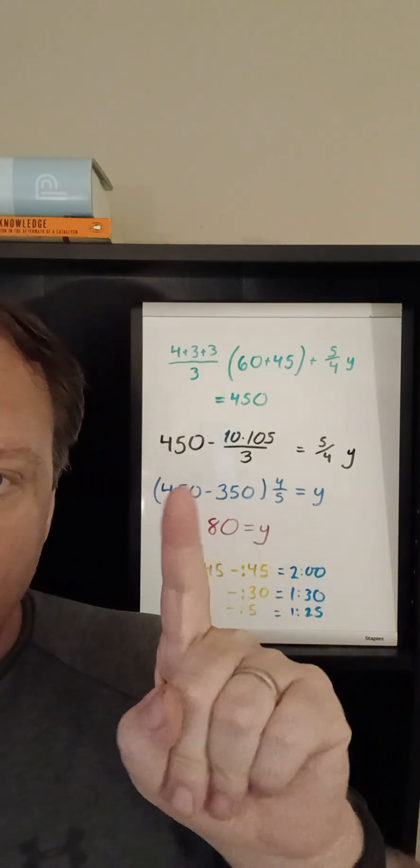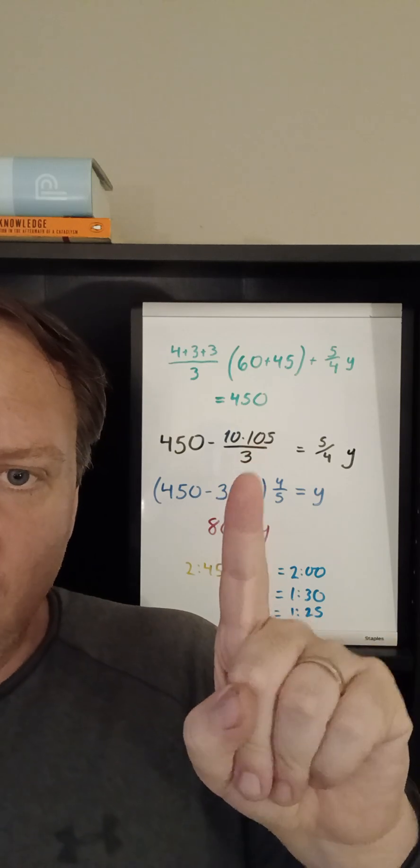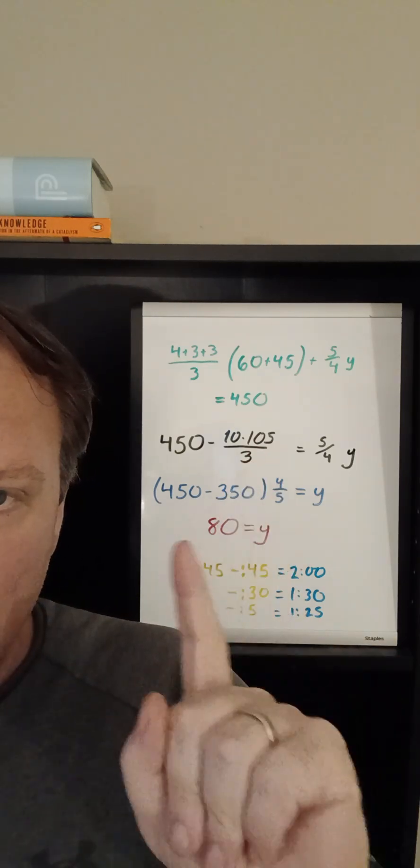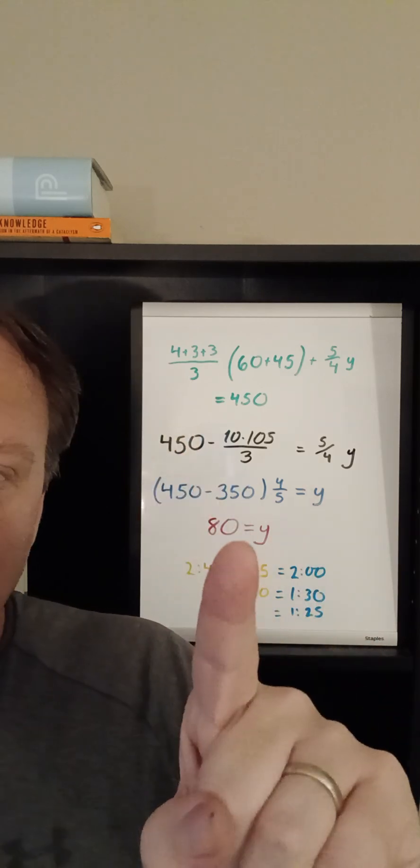Now in the next move, I'm going to start computing this. So 105 divided by three, that's the easier thing to do. And that's the same thing as 35. So then I do 35 times 10, I get 350.